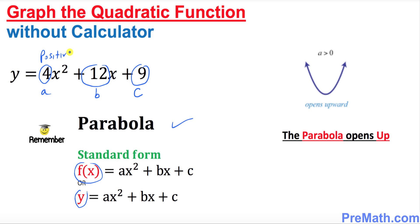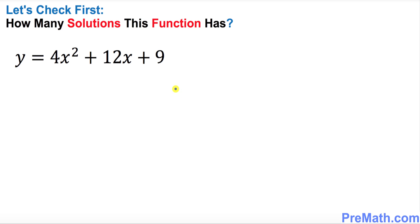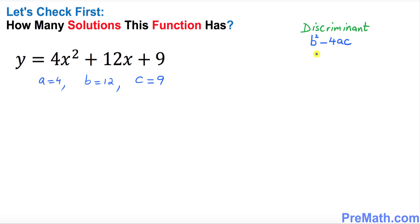At this very first step, we want to find out how many solutions this function has. For that reason, we will be using the discriminant, which is b squared minus 4 times ac. We know our a is 4, b is 12, and c is 9. Let's go ahead and plug those in.